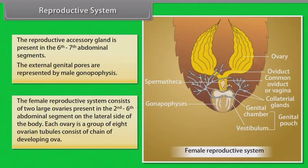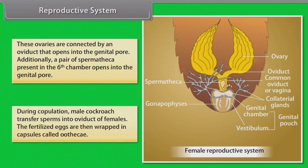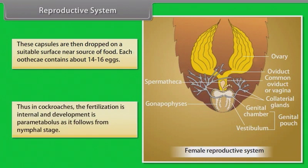The female reproductive system consists of two large ovaries present in the second to sixth abdominal segments on the lateral side of the body. Each ovary is a group of eight ovarian tubules consisting of a chain of developing ova. These ovaries are connected by an oviduct that opens into the genital pore. Additionally, a pair of spermathecae present in the sixth chamber opens into the genital pore. During copulation, the male cockroach transfers sperms into the oviduct of females. The fertilized eggs are then wrapped in capsules called ootheca. Each ootheca contains about 14 to 16 eggs. In cockroaches, fertilization is internal and development is paurametabolous, following a nymphal stage.